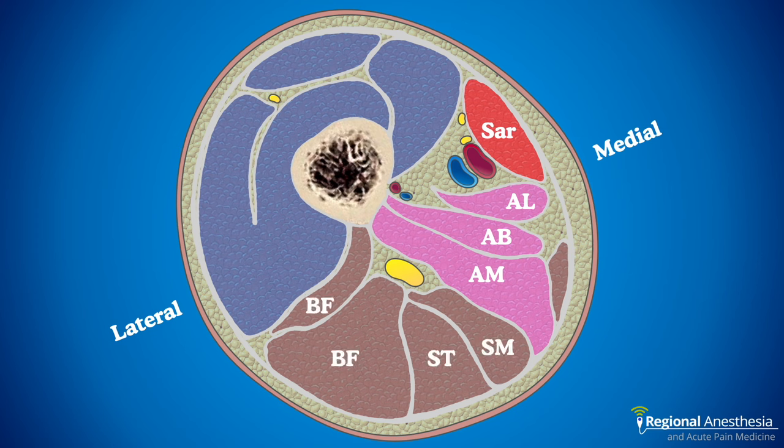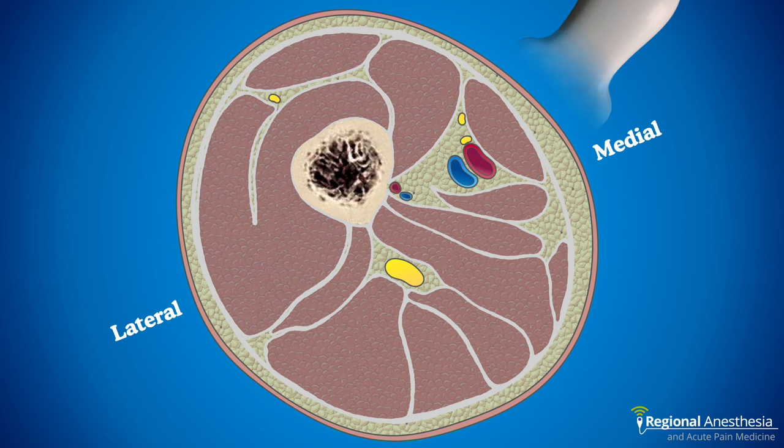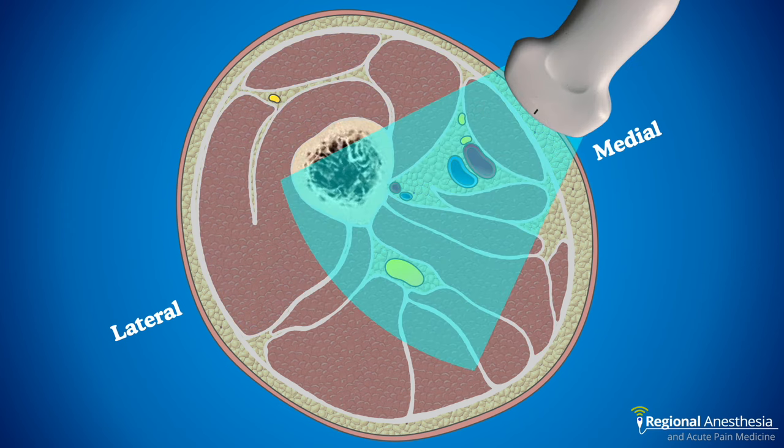And finally we have our hamstrings — biceps femoris, and semitendinosus and semimembranosus. Tucked in between adductor magnus and the hamstrings below is our sciatic nerve. With our probe positioned on the anterior medial thigh, we can image all of these relevant structures.